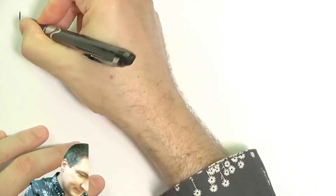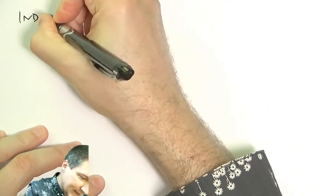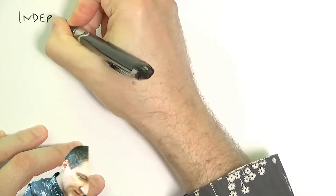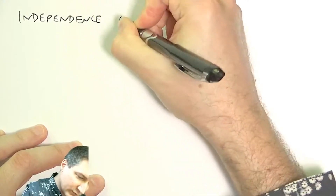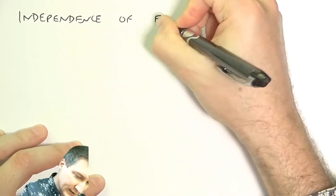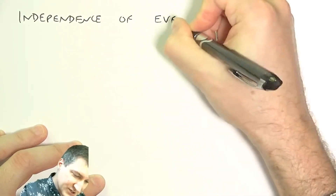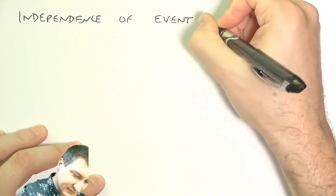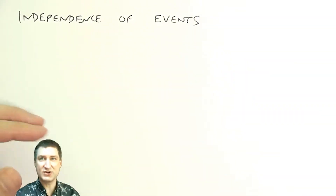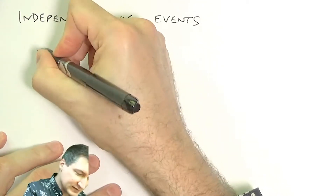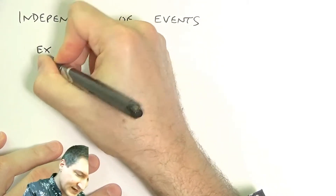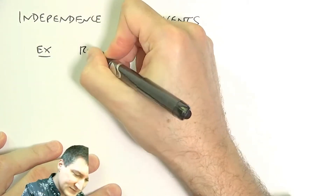What I want to talk about today is called independence of events. This is an important concept, especially in the context of when we're doing a large number of sequential trials that don't have anything to do with each other. For example, let's suppose that I roll two dice.